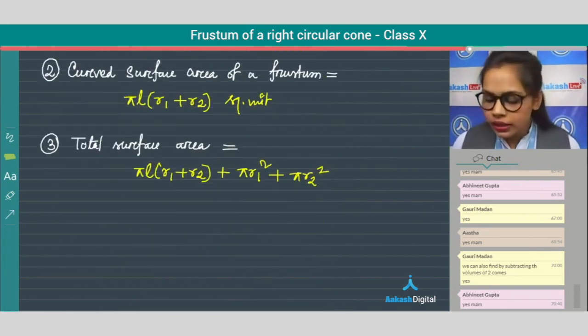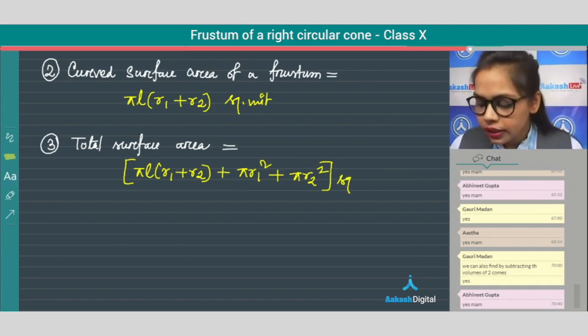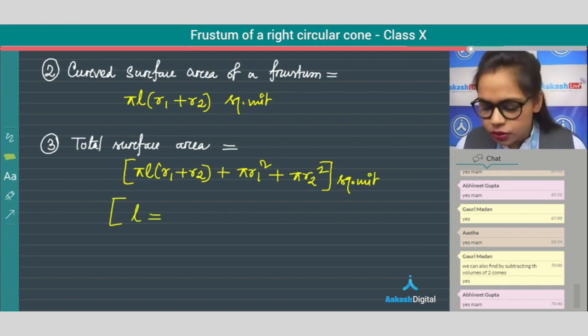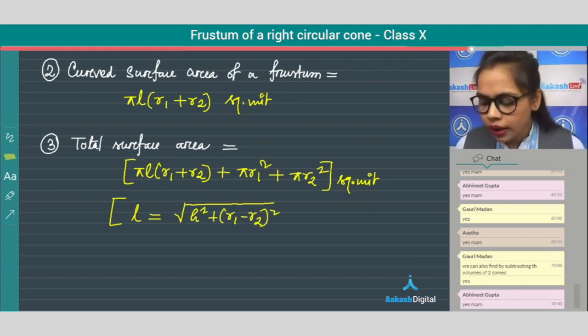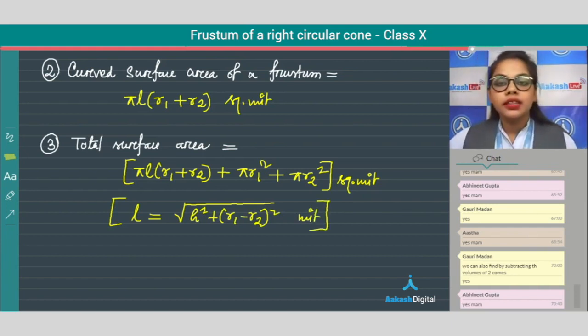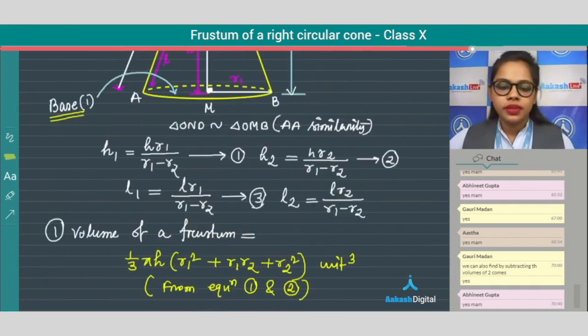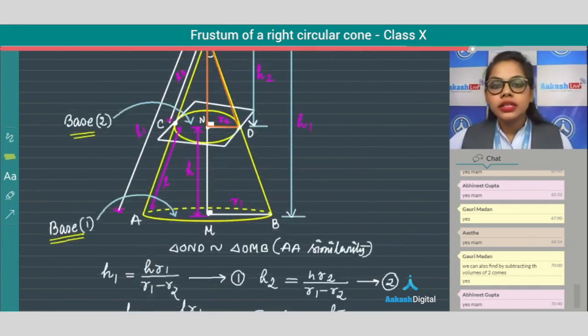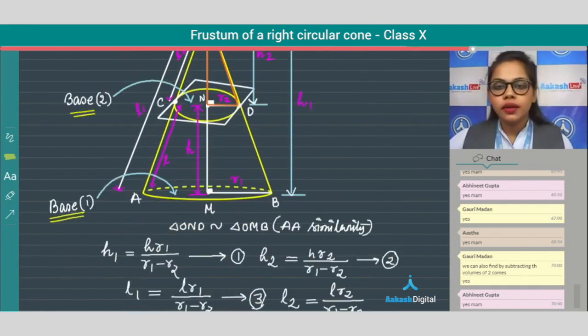Now what is l here? This l is equals to root under h square plus r1 minus r2 whole square unit, which we get by using the Pythagorean theorem. So I hope all the related formulas are very clear to everyone.